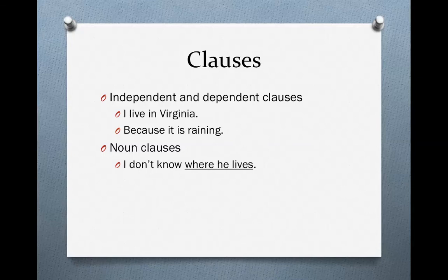Dependent clauses, however, have a subject and a verb, but cannot stand on their own. For instance, 'I live in Virginia' is an independent clause. The subject is 'I,' the verb is 'live,' and this sentence can stand on its own. On the other hand, 'because it is raining' is a dependent clause. The subject is 'it,' the verb is 'is raining,' but this sentence cannot stand on its own because of the word 'because.' It must be connected to another clause — that's why it's called a dependent clause.